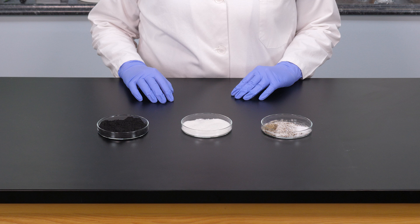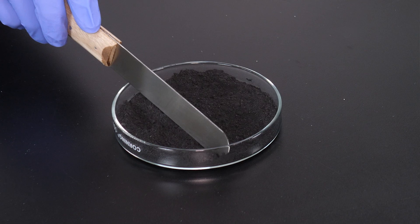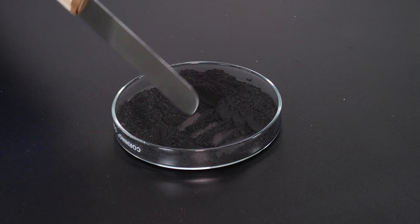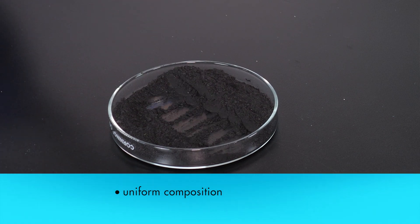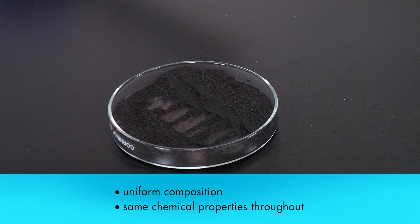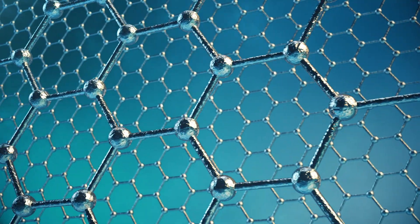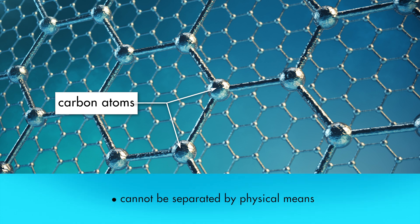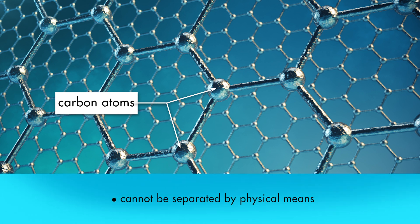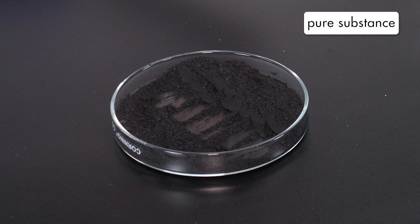Now that we know what physical and chemical properties are, let's examine three substances to determine if they are pure substances or mixtures. The first sample is graphite. This sample has the same physical properties throughout, so it has a uniform composition. If we test the chemical properties of each portion of the sample, we find that it has the same chemical properties throughout. If we perform a chemical analysis of graphite, we discover that it contains only one component, carbon, which cannot be separated by physical means. Therefore, we conclude that graphite is a pure substance.